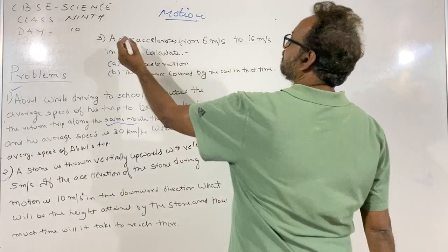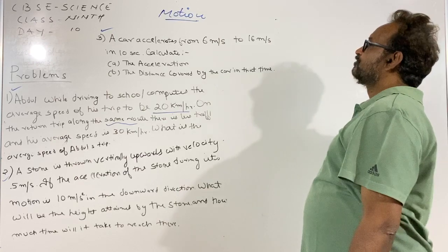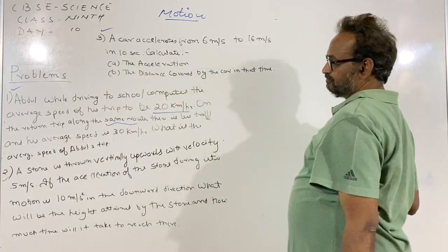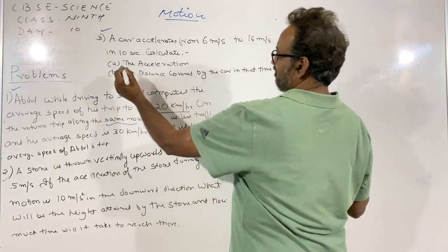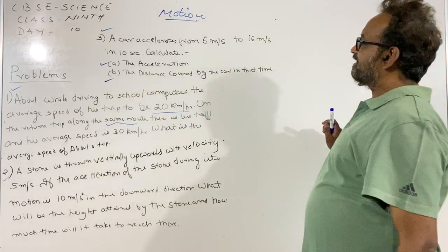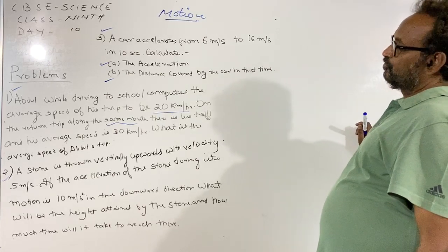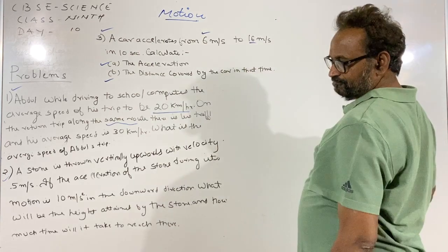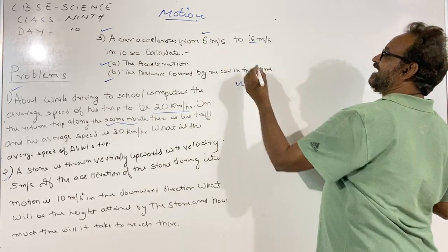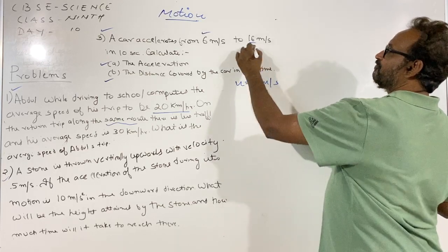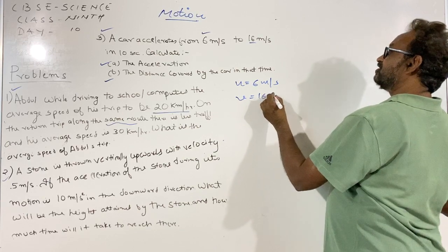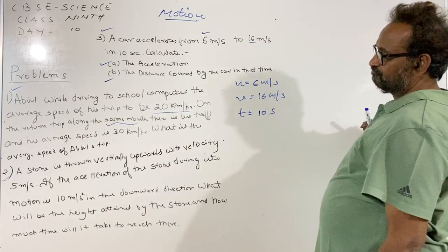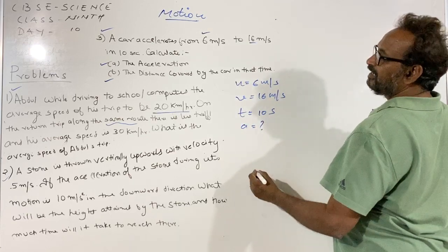Now we have one more problem. A car accelerates from 6 meters per second to 16 meters per second in 10 seconds. Calculate its acceleration and the distance covered by the car in that time. The velocity of the car is changing from 6 meters per second to 16 meters per second. Therefore, initial velocity is 6 m/s, final velocity is 16 m/s, and time is 10 seconds.